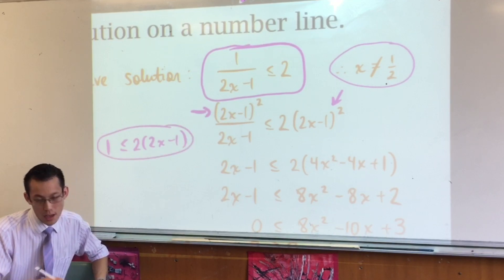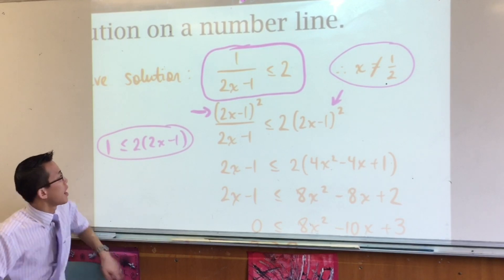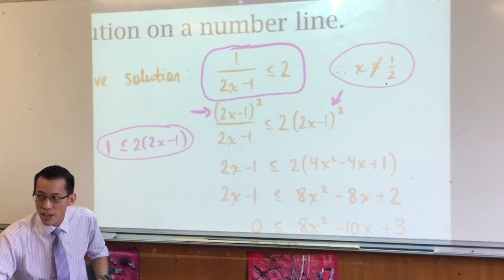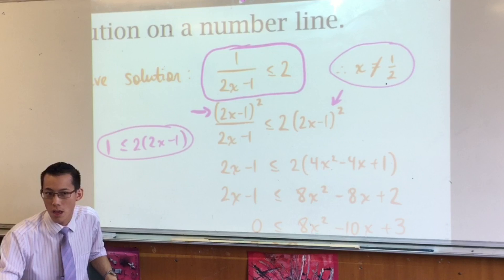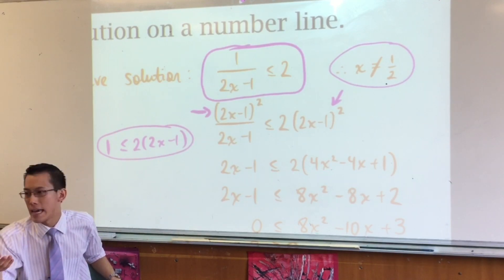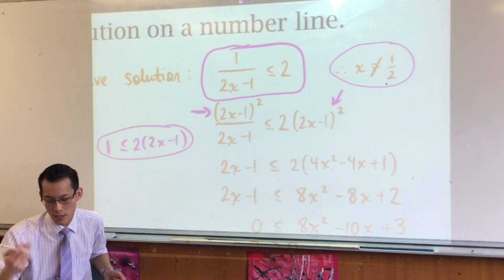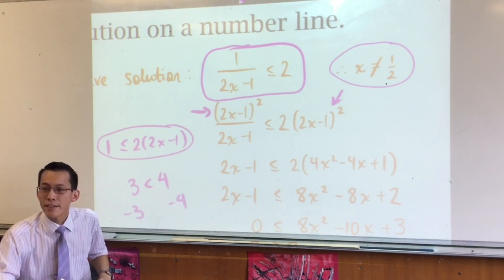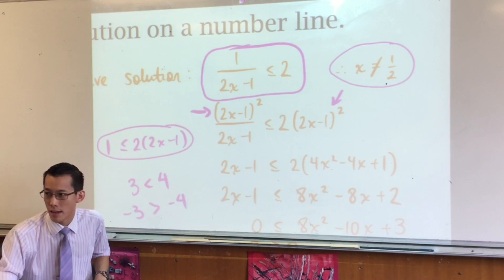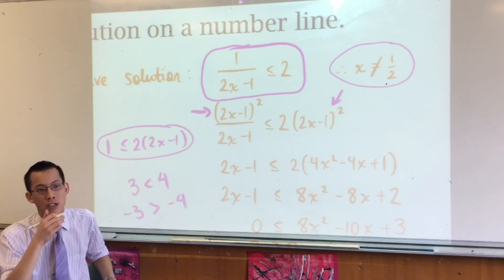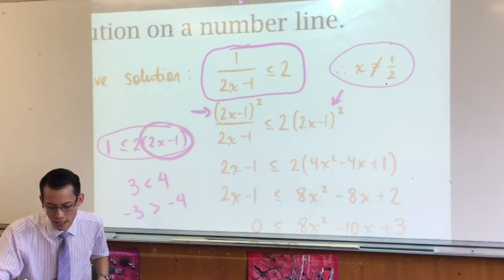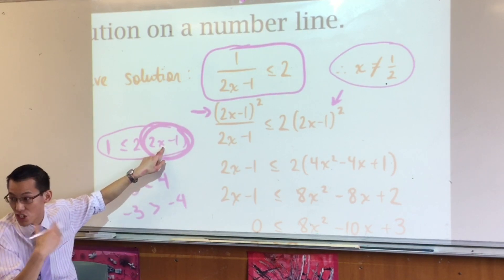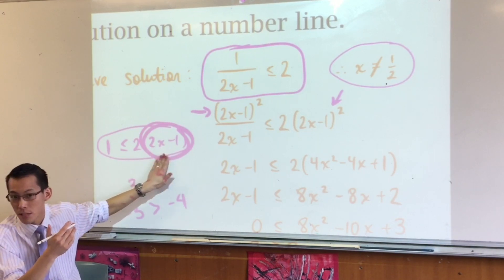Because you don't know whether the denominator is negative or positive. Very good. So see this line here? I've multiplied through by 2x minus 1, and that inequality sign is still facing the same direction. Why would I change it? Now, the answer is, why do I change the direction of the inequality? In what circumstances? When whatever I multiply by is negative. If you multiply both sides of something like this, 3 is less than 4, you multiply by negative 1, negative 3 is not less than negative 4. Negative 3 is greater than negative 4. So negative numbers switch the direction of the inequality.